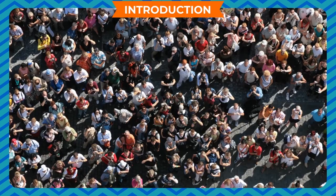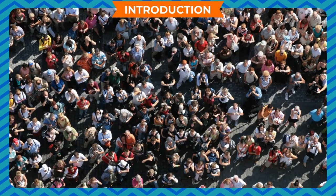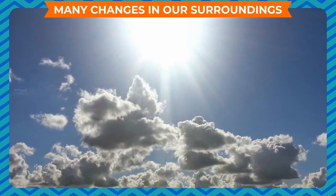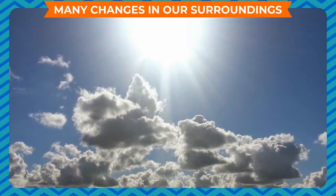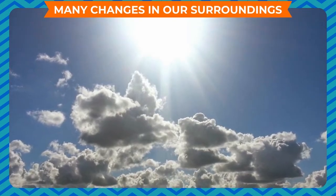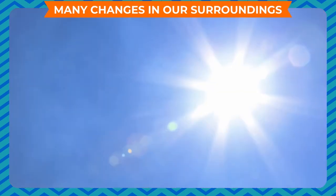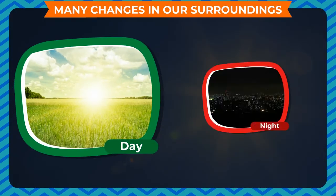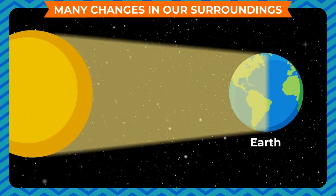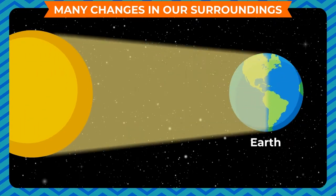Many changes in our surroundings occur due to specific causes. Changes in weather occur due to the heat of the sun. Day and night alternate due to the rotation of the earth. In the same way, every change has a cause.